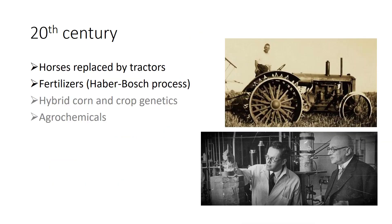Over a little more than a century, technological innovations have significantly changed agricultural practices and increased yields. Four key innovations—the internal combustion engine, the Haber-Bosch process of producing nitrogen fertilizer from the air, the introduction of hybrid corn and focus on crop genetics, and the development and use of farm chemicals—transformed agricultural production in the 20th and early 21st centuries.